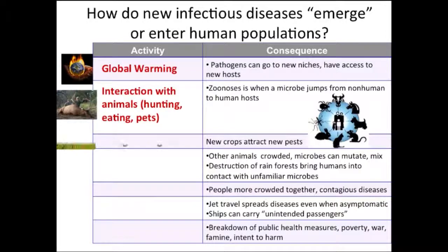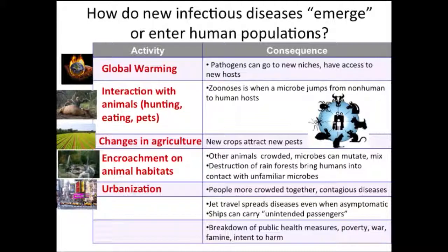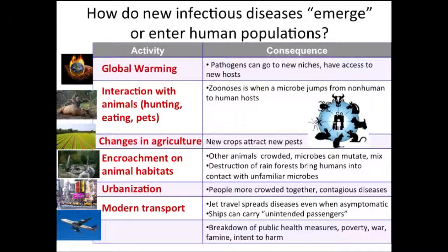Changes in agricultural practices can bring new crops into new areas that attract new pests with access to human populations. As we get more crowded, we encroach more on animal habitat, crowding animals together that shouldn't have been in contact, allowing microbes to mutate and enter human populations. Greater urbanization also spreads infectious diseases. Modern transport has played a major role — jet travel spreads diseases even when patients are asymptomatic, and ships carry unintended passengers.